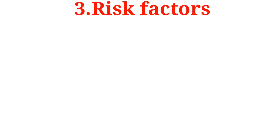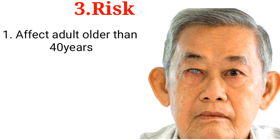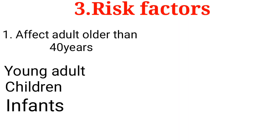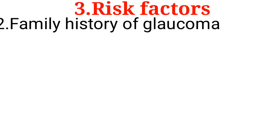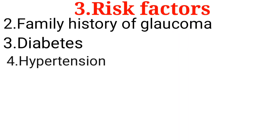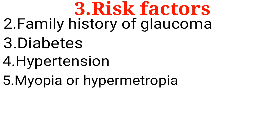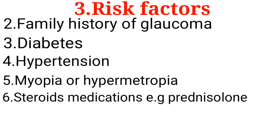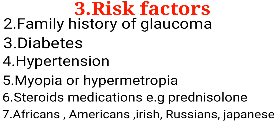Glaucoma mostly affects adults older than 40 years, but young adults, children, and even infants can have it. Risk factors include family history of glaucoma, diabetes, hypertension, myopia or hypermetropia, and steroid medications such as prednisolone. African Americans, Irish, Russian, and Japanese populations are all at risk of different types of glaucoma depending on ethnicity.